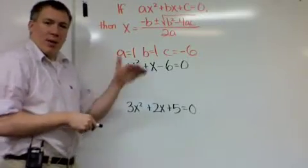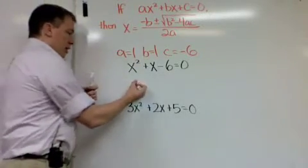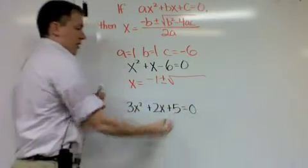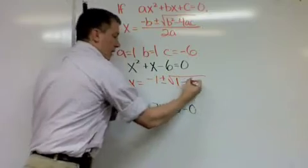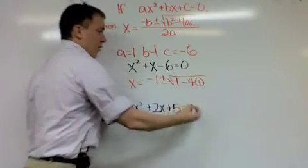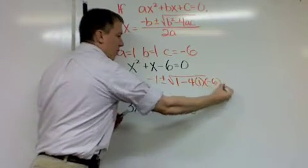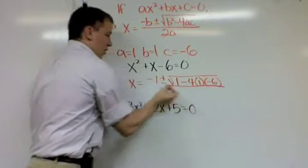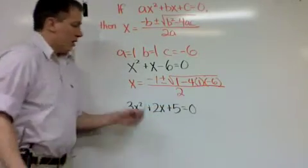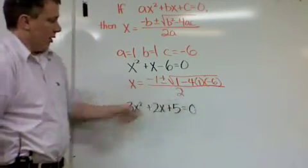And so I'm just going to plug it here into the formula. x equals negative b, so minus 1 plus or minus the square root of b squared, which is 1, minus 4 times a, which is 1, times c, which is negative 6. All over 2a. a is 1, so that's 2.